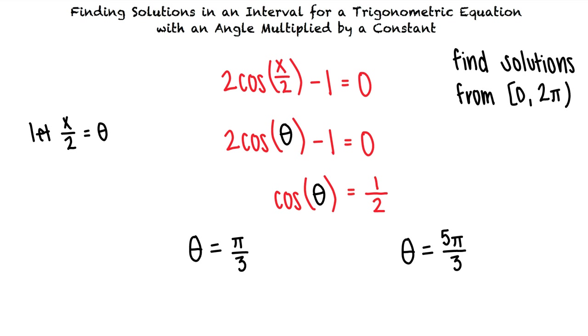So this is our final solution? Not quite. Remember that in the original equation we wanted to solve for x but we're still in terms of theta. We need to substitute x over 2 back into our equation for theta.